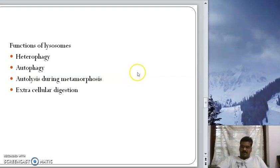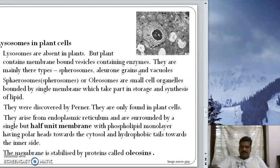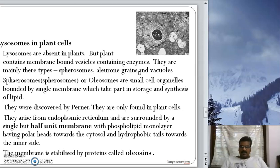Though exact lysosomes are not present in plant cells, plant cells do contain some kinds of lysosomes. The lysosomes present in plant cells are called spherosomes or oleosomes. These are also organelles bounded by a single membrane, and they are concerned with the storage and synthesis of lipids.